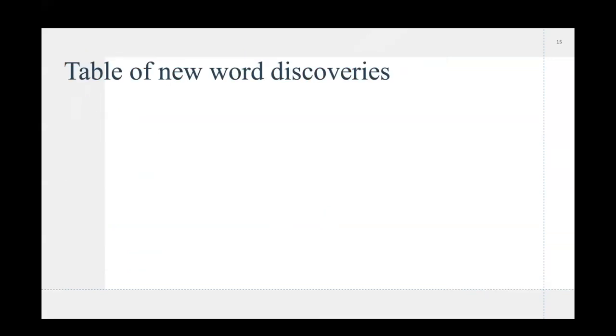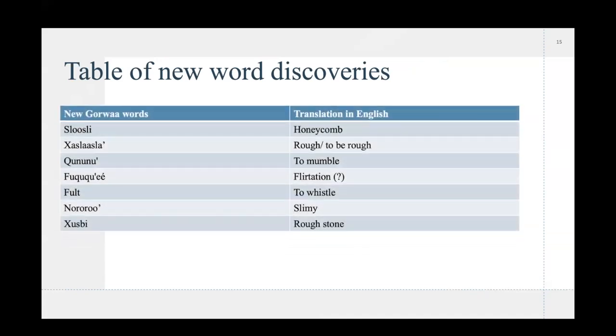So then, I'm just gonna show you one last thing, which is the table of new words that I discovered. So, we have the new words in Gorwaa. We have flofi, which is handsome. Khathlaflat, which is to be rough. Kununu is to mumble. Fuku'ku'e is flirtation according to the Iraqw dictionary. So, it's not entirely sure, but because I had given the example of the woman hears the rustling of the leaves. And I had gotten the flirtation of the wind with the leaves or something along those lines. So, it's not confirmed, but seemingly that's what it means. Futl is to whistle. Nororo is slimy or slippery in some examples. But slimy was the main one that I had gotten. We have khuspi, which is a type of rough stone.